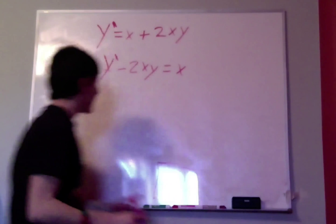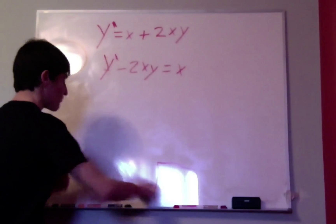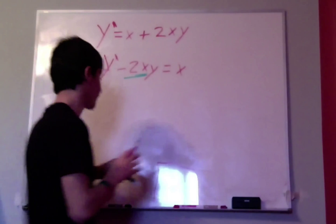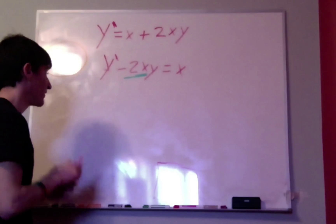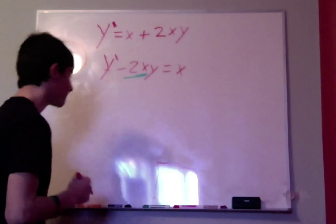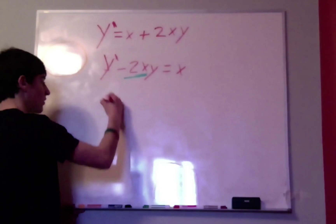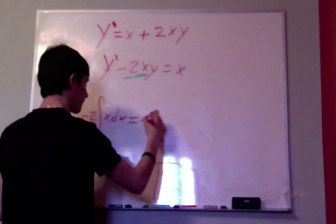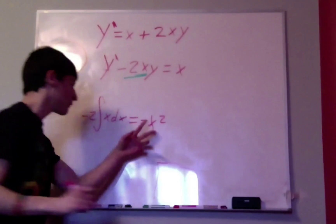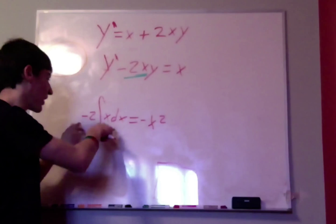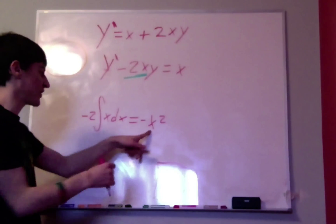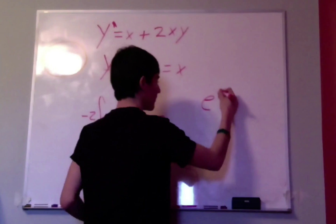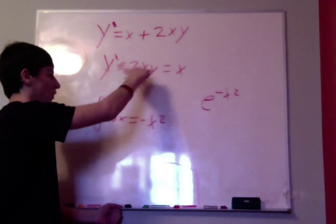Now you want to find something called the integrating factor. What you do is integrate the coefficient in front of the y term, and you want everything to be linear — you don't want any y squared or anything, because otherwise it's not going to work. And if you do have y squared, I'm going to show you how to sometimes make it linear. So we're going to take the integral of negative 2x dx, and we get negative x squared. It's negative x squared plus a constant, but we're not solving this integral — we're just finding something we can multiply both sides by.